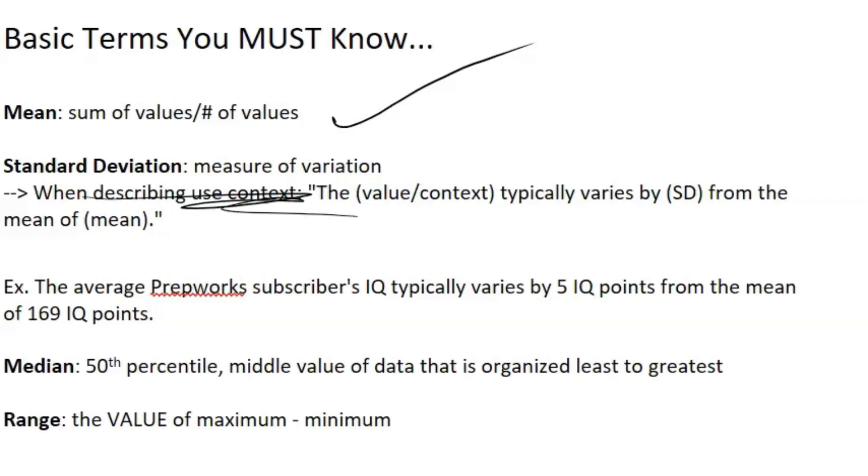Standard deviation is just a measure of variation. And here's an important part when you're describing it in context. So you want to say, the value/context typically varies by standard deviation value from the mean. That sounds kind of weird. So let's look at the example.